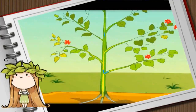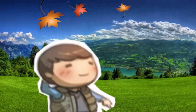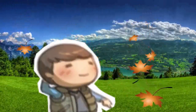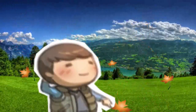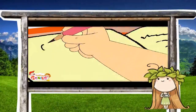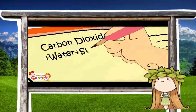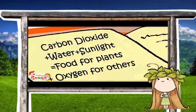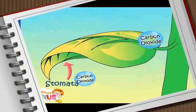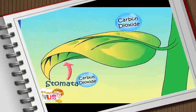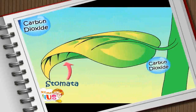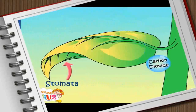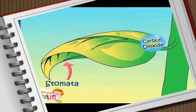Sugar is changed into starch and stored in leaves, stems, fruits, seeds, and roots. So plants don't need oxygen? Oxygen is considered a waste product of plants. Since oxygen is not needed by plants, they give it up. It is an important product of photosynthesis, and it is given up by plants through their breathing organ called stomata.